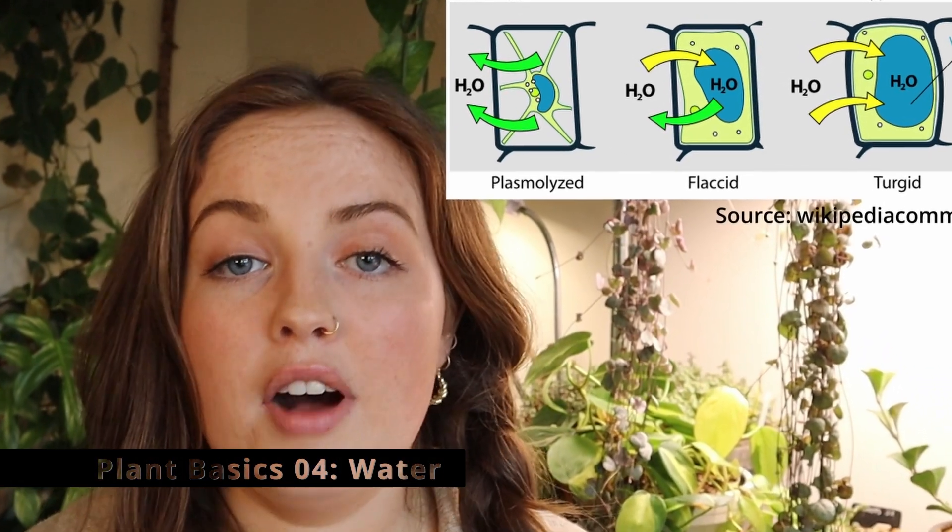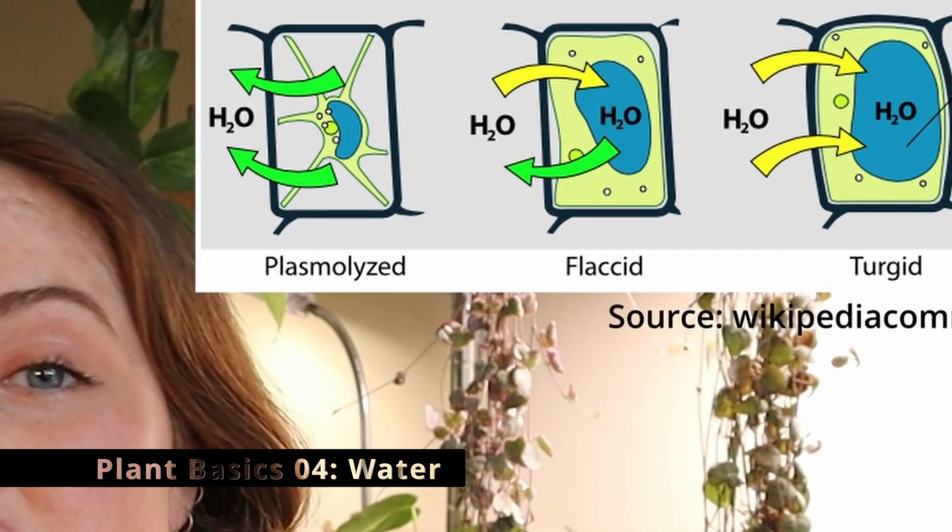When our substrate is saturated, the roots take up water via the root hairs through a process known as osmosis, which we covered in episode four. This water then moves through the plant and gets taken up into the cells. The xylem cells transport this water through the stem and up through the leaves. Within the plant cell itself there's something called a vacuole, which is responsible for maintaining the balance of water in a plant cell. Cells can be in different states — too little water and the cell becomes collapsed and desiccated, or too much water and it becomes very turgid and pushed out.